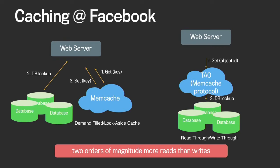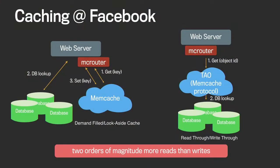The second model is the read-through, write-through cache served by the TAO system. In this model, we try to fetch the data from the cache, and if it's not in the cache, the system does a database lookup on the client's behalf. It's important to note that we actually use the same memcache protocol for this system to leverage our existing client libraries. What's common across both systems is that every single cache query at Facebook goes through MacRouter using the memcache protocol.